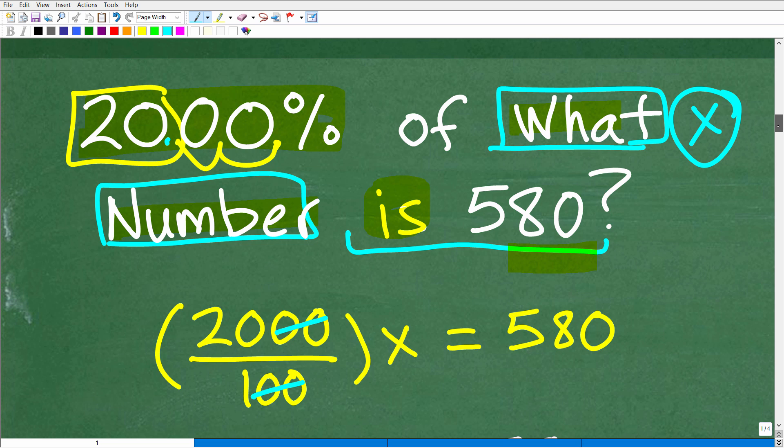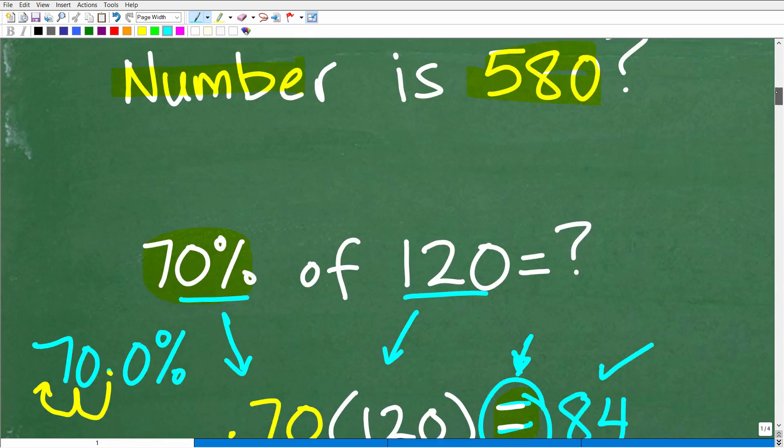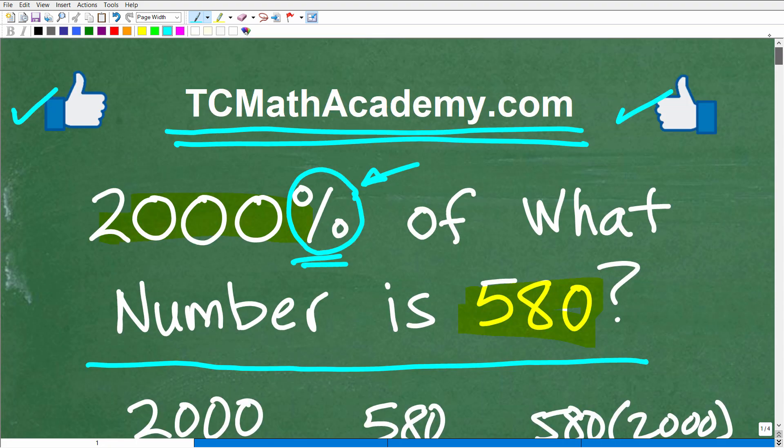And remember, X was the number that we're looking for. So 2,000% of 29 is 580. And of course, you can double-check that on your calculator. So what is kind of the big picture here? Well, the big picture is there's different ways to solve percent problems. But you do need to be able to solve percent problems because percent problems are all over the place in real life. And again, if you got this right but you like some different technique that you learned in school, stick with that as long as you understand it and you are successful in your problem-solving, that's what counts.